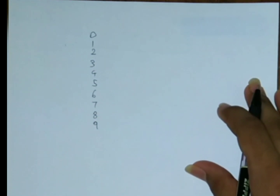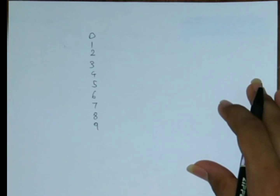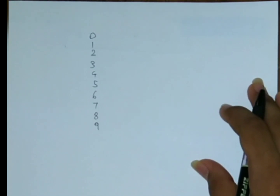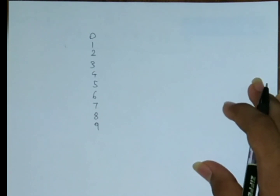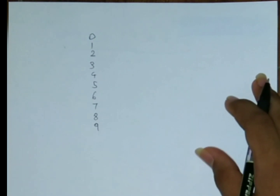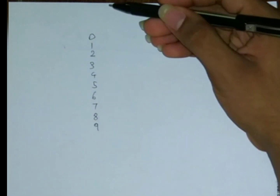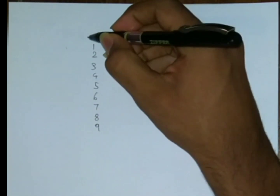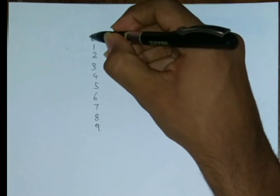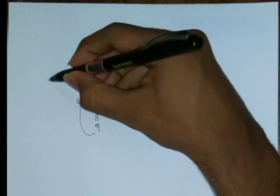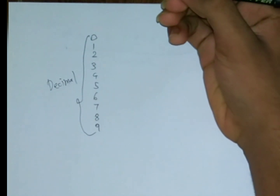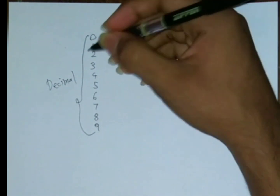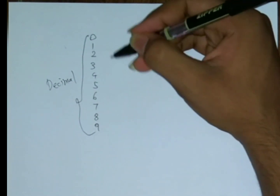Hello guys, this is silvershade and today I'm gonna be showing you how to convert hex to RGB color. For that you need to know a little about number systems. These numbers are called the decimal system because it has ten digits.